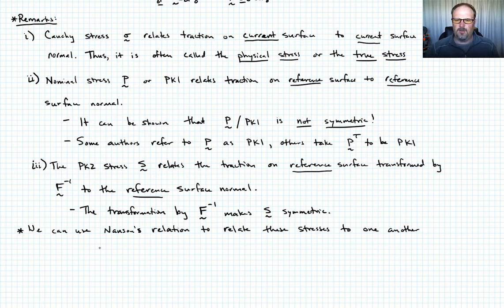So to do that, we use what's called Nanson's relation to relate the stresses to one another. Nanson's relation is N_i d_gamma equals J, the Jacobian of the deformation, times N_i_naught, which is the unit normal in the reference state, times F_ji inverse times d_gamma_naught, which is the area of that surface in the reference state. Let's call that equation four.